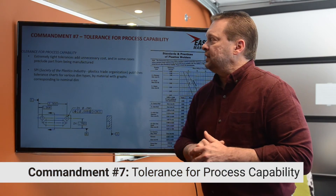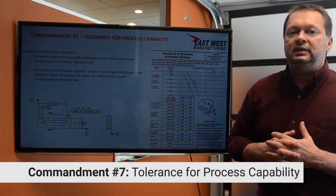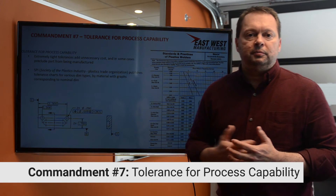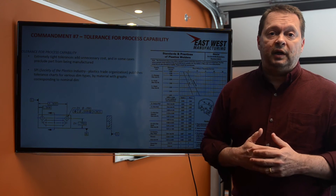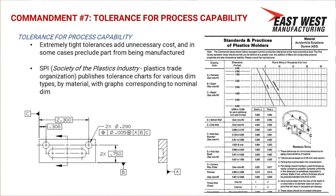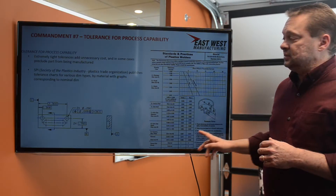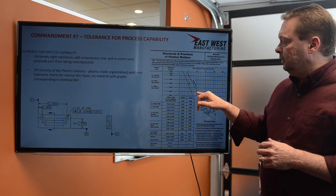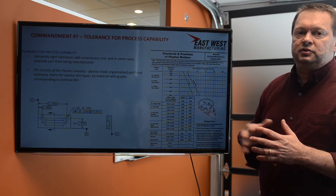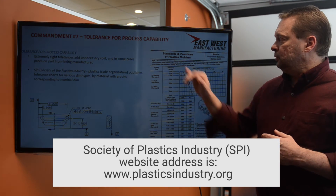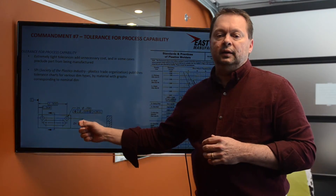Commandment number seven is tolerancing for process capability. Even seasoned engineers will provide prints or parts toleranced in such a way that the part is very difficult or impossible to manufacture and hold tolerance. A reference we have is the SPI — the trade association for the plastics industry — which has guidelines for dimensioning and tolerancing a part by material. For example, using the ABS guideline, based on the dimension, it will tell you the appropriate tolerance. Reference www.spi.org; they have tolerance reference sheets by material type so you can appropriately tolerance your part.